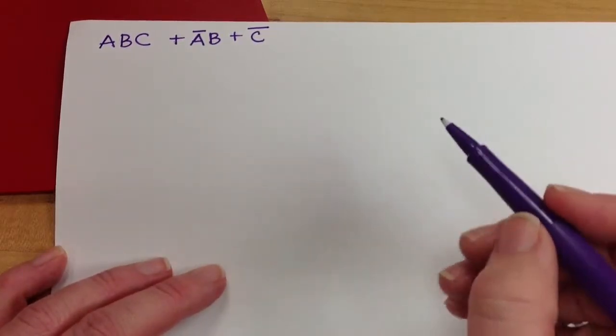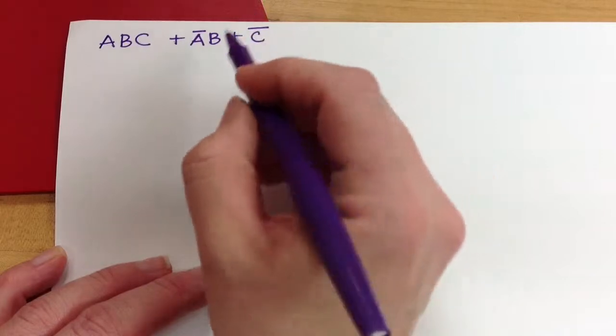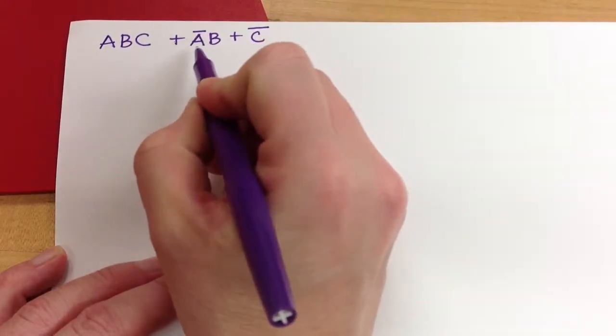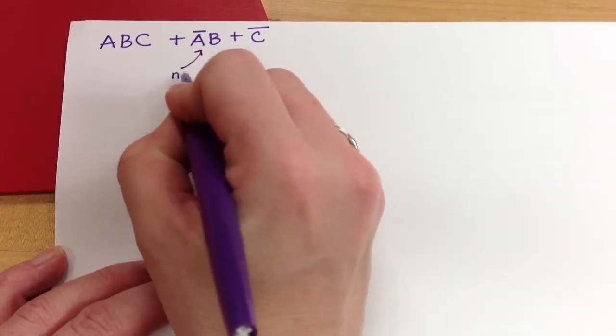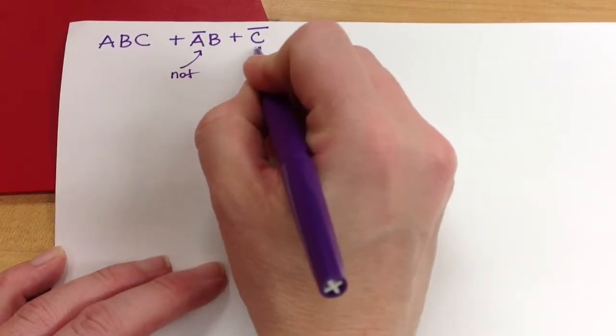So when I look at this and begin to see what gates I need, I have here on this, I'm going to need a NOT, and here I'm going to need a NOT.